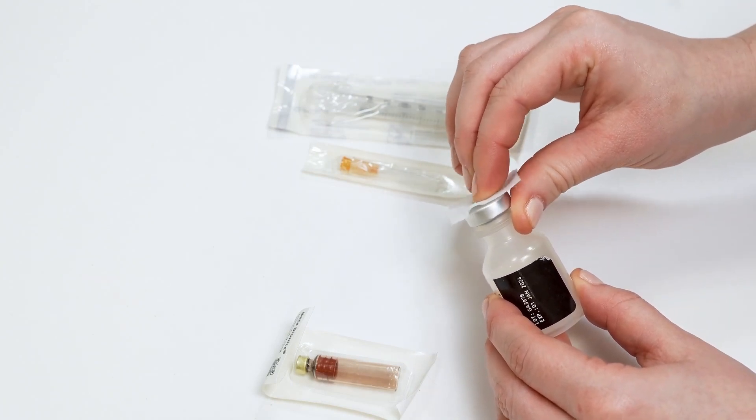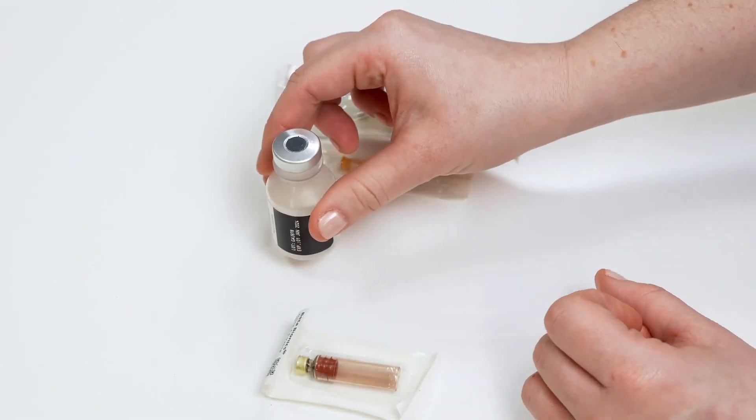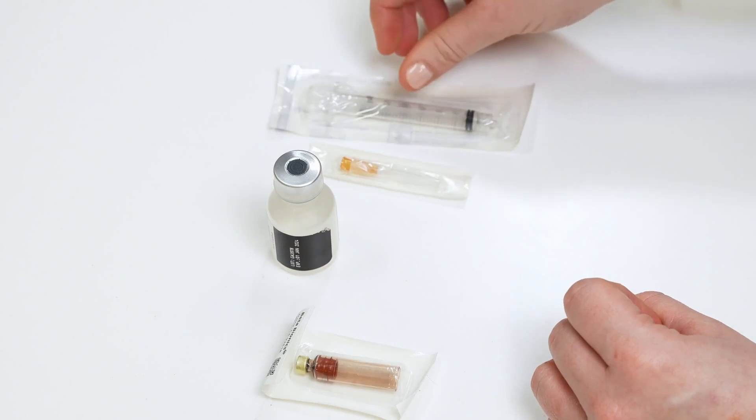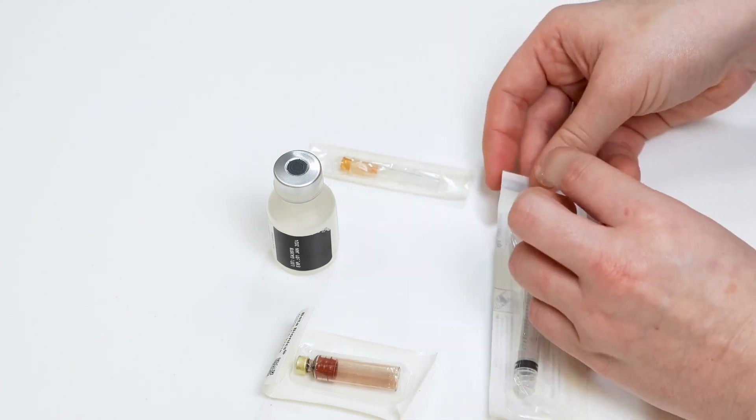First, wipe the top of the insulin vial with an alcohol wipe and let it dry. Next, open the syringe package and remove the syringe from the packaging.